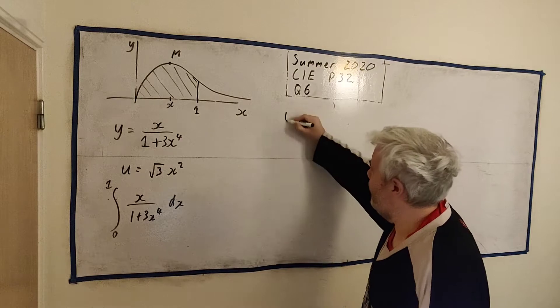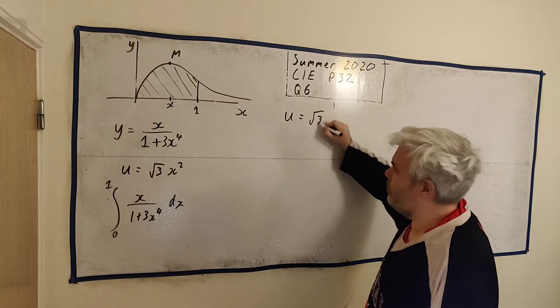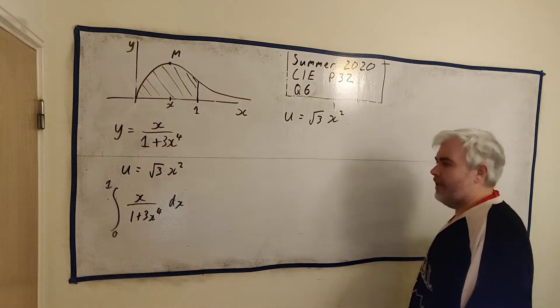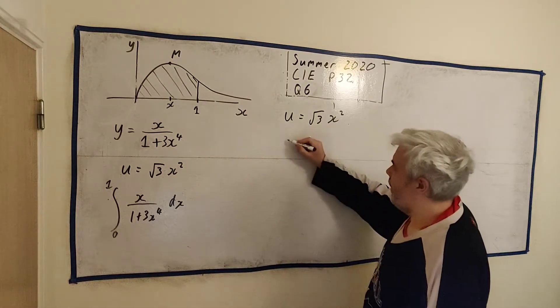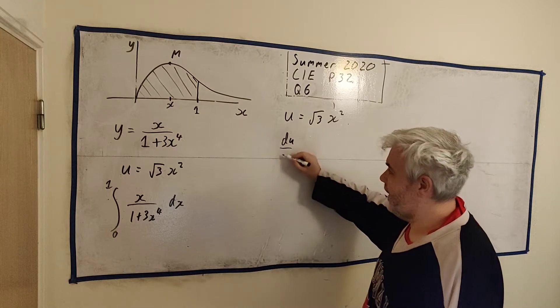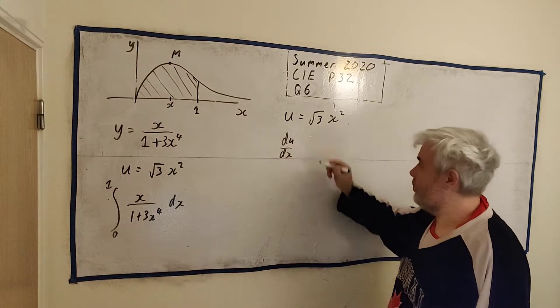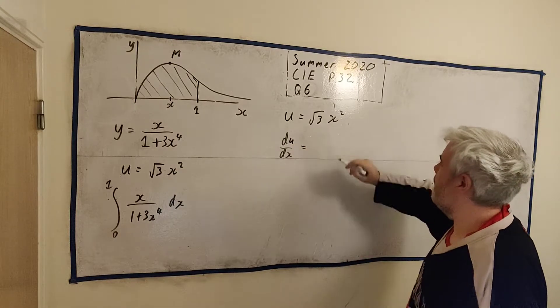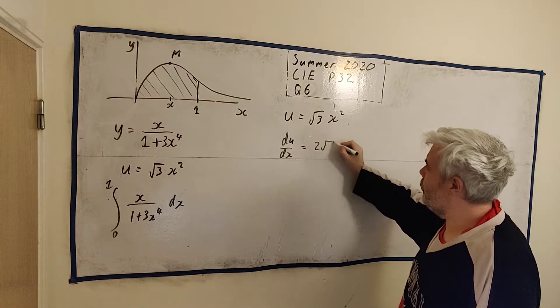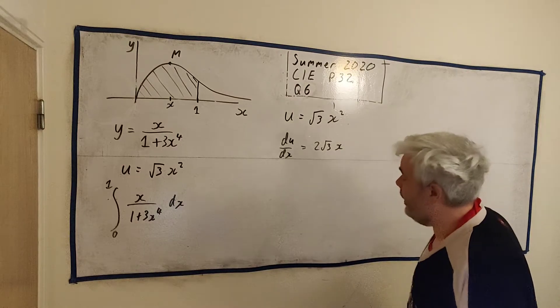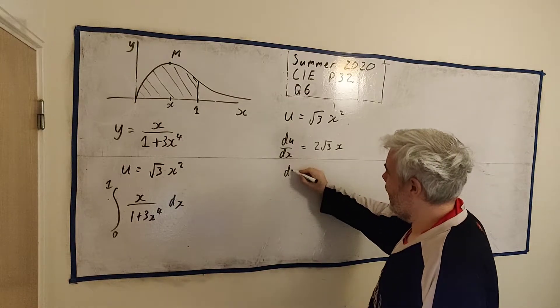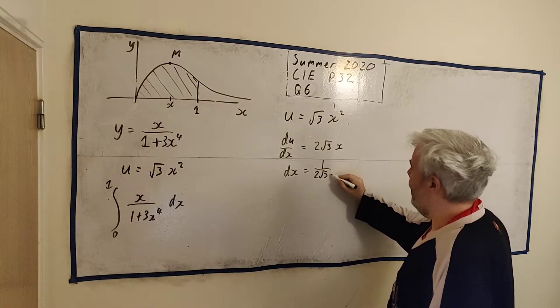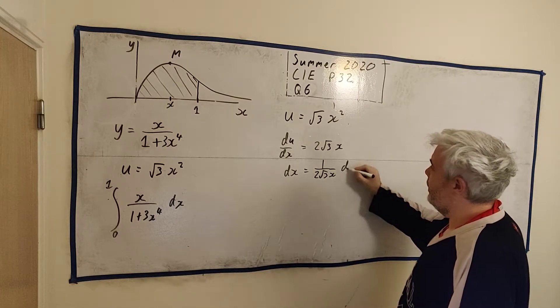So we write u is equal to square root of 3, x squared. Now, the other thing we need is to replace dx. So we do that by differentiating u. This is standard when we do substitution. The derivative of this is 2 square root of 3 x. That means that dx is equal to 1 over 2 square root of 3 x, du.